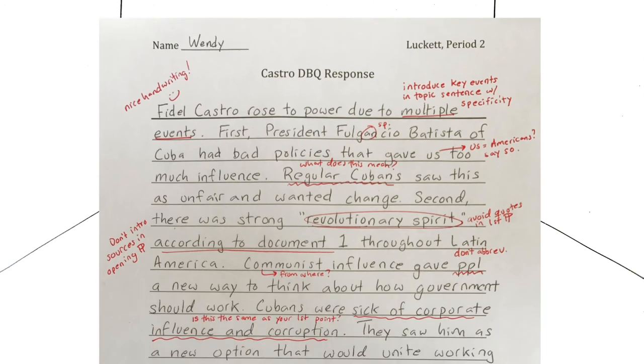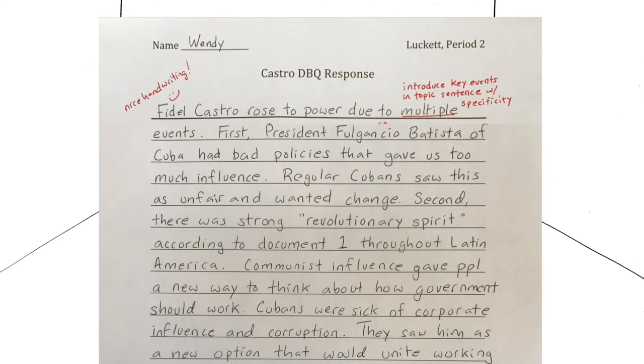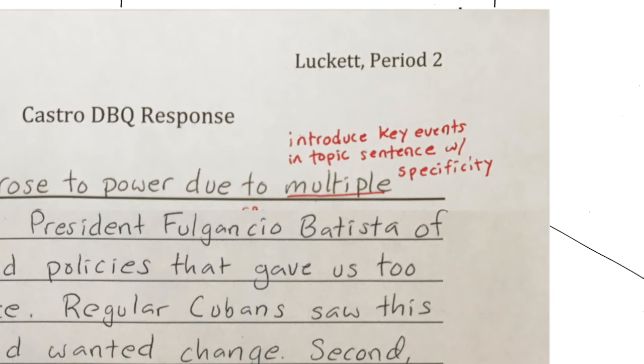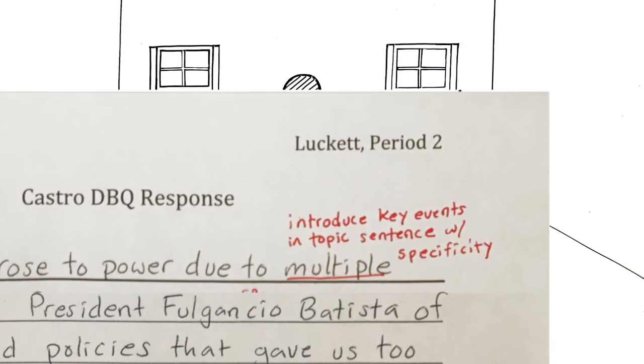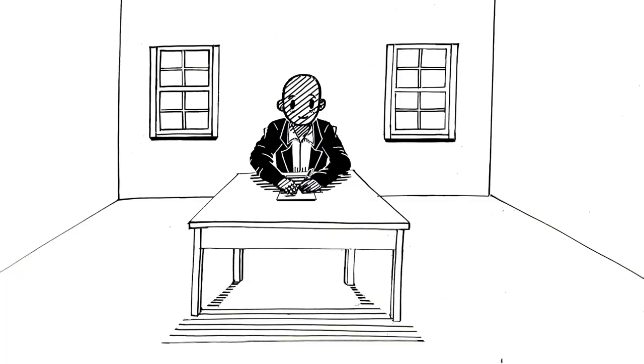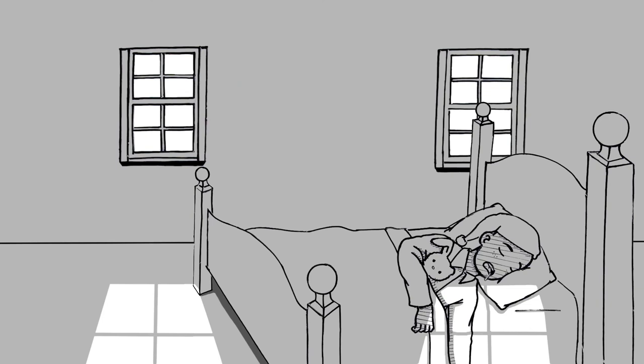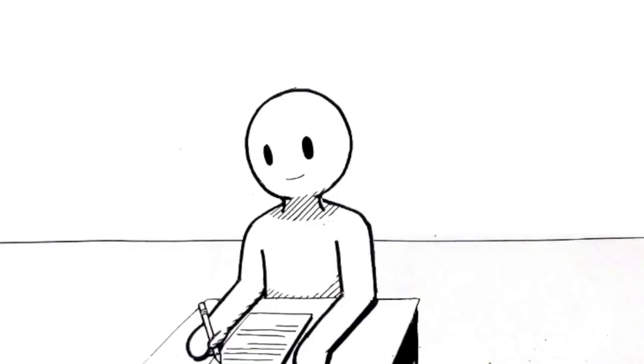Instead of giving feedback on a grab bag of topics, he'll focus his comments on the skills that they're explicitly working on. This level of focus will allow Luckett to get to bed on time and catch up on some sleep. And tomorrow, kids will be able to process and implement the targeted feedback.